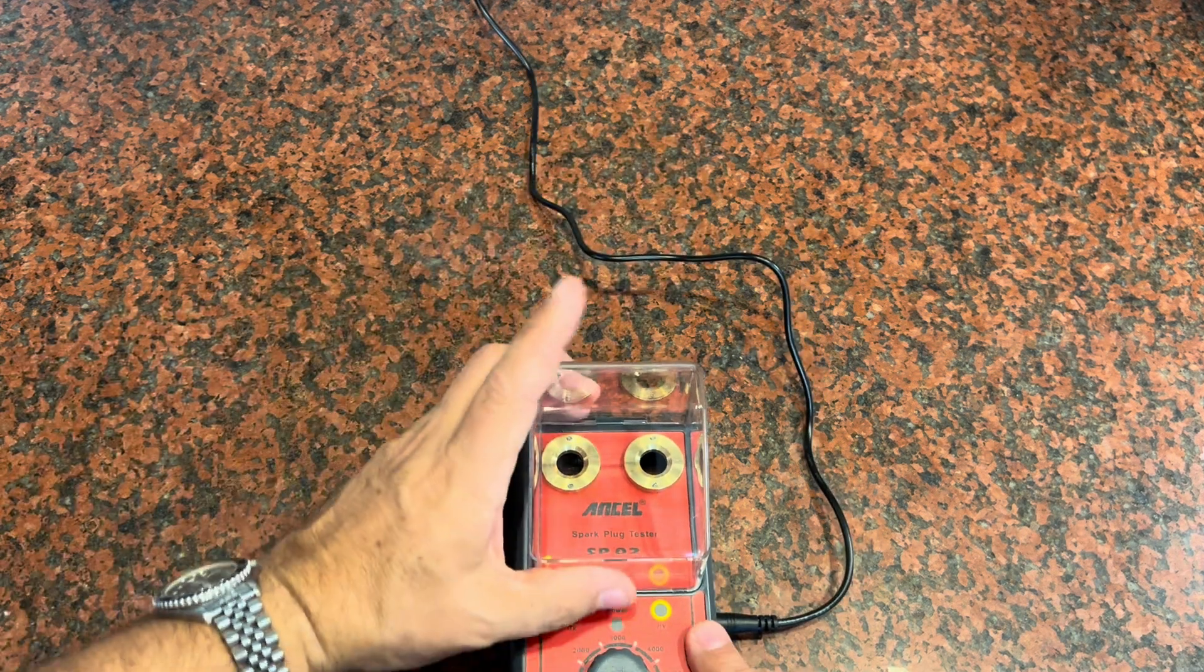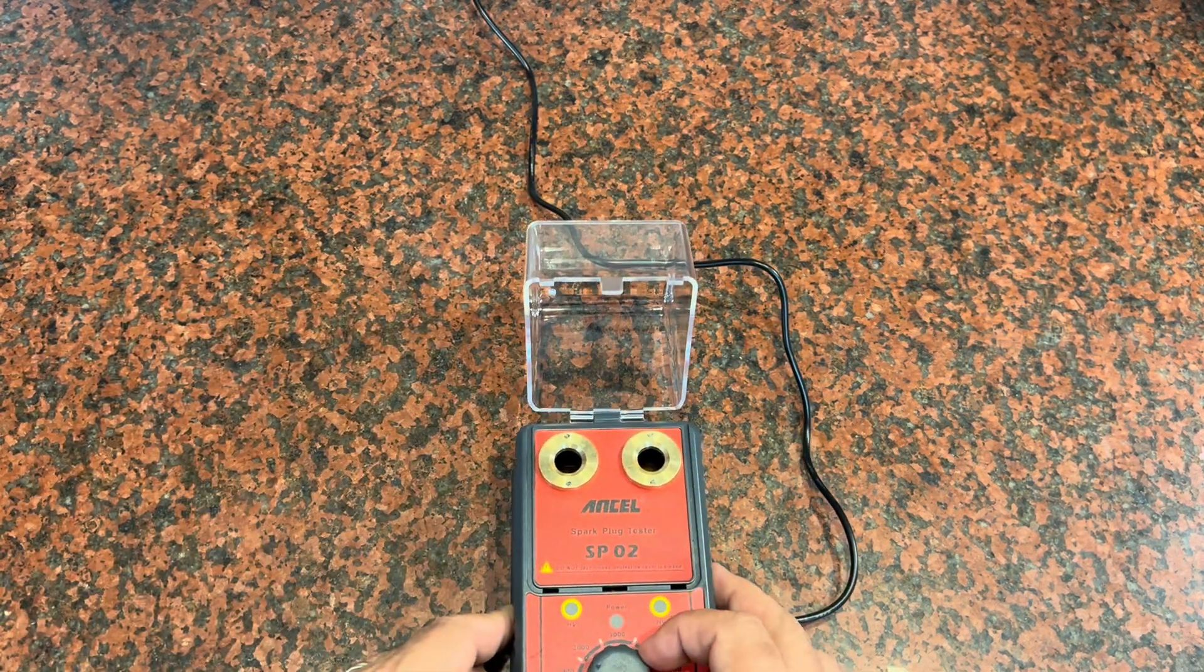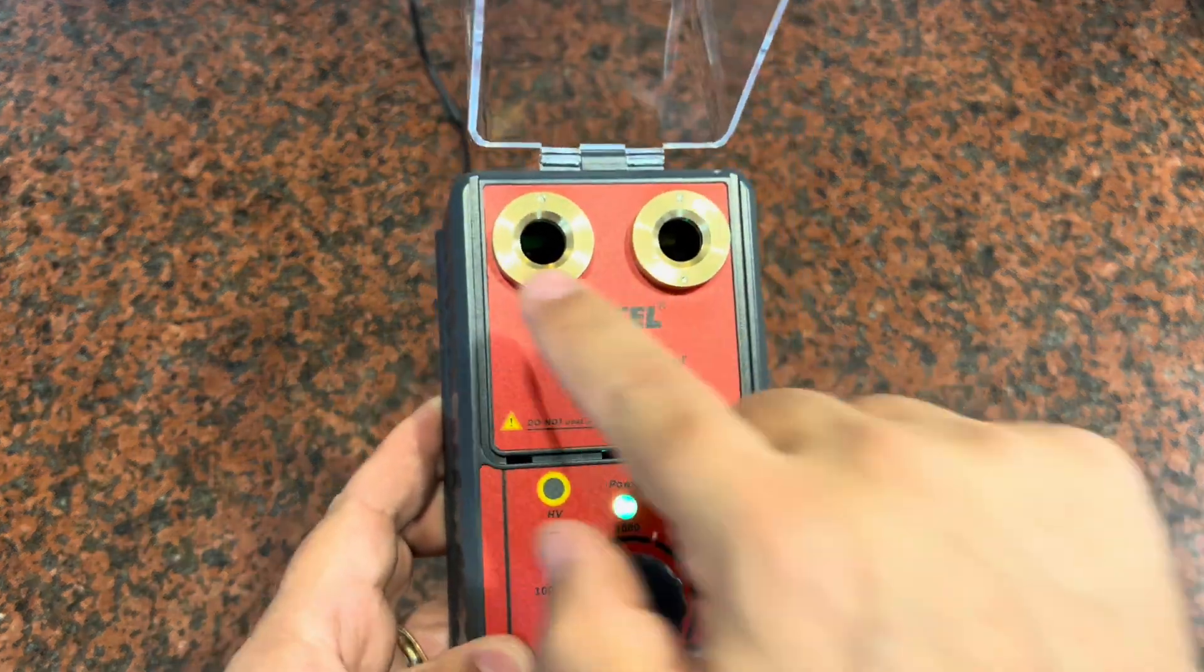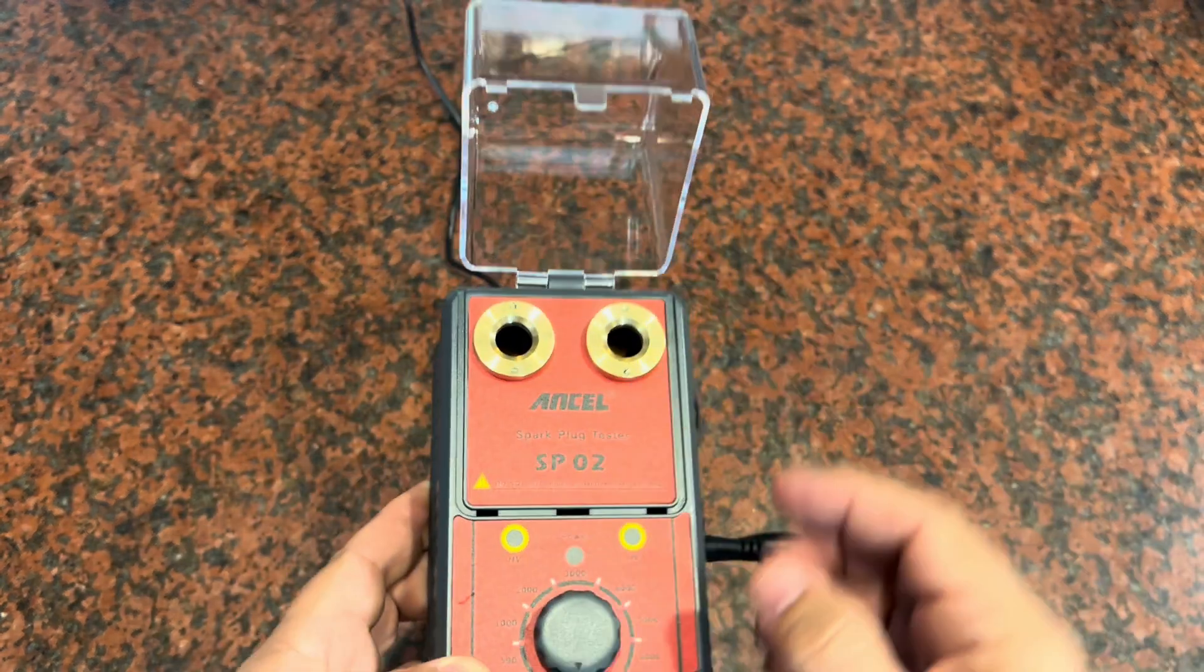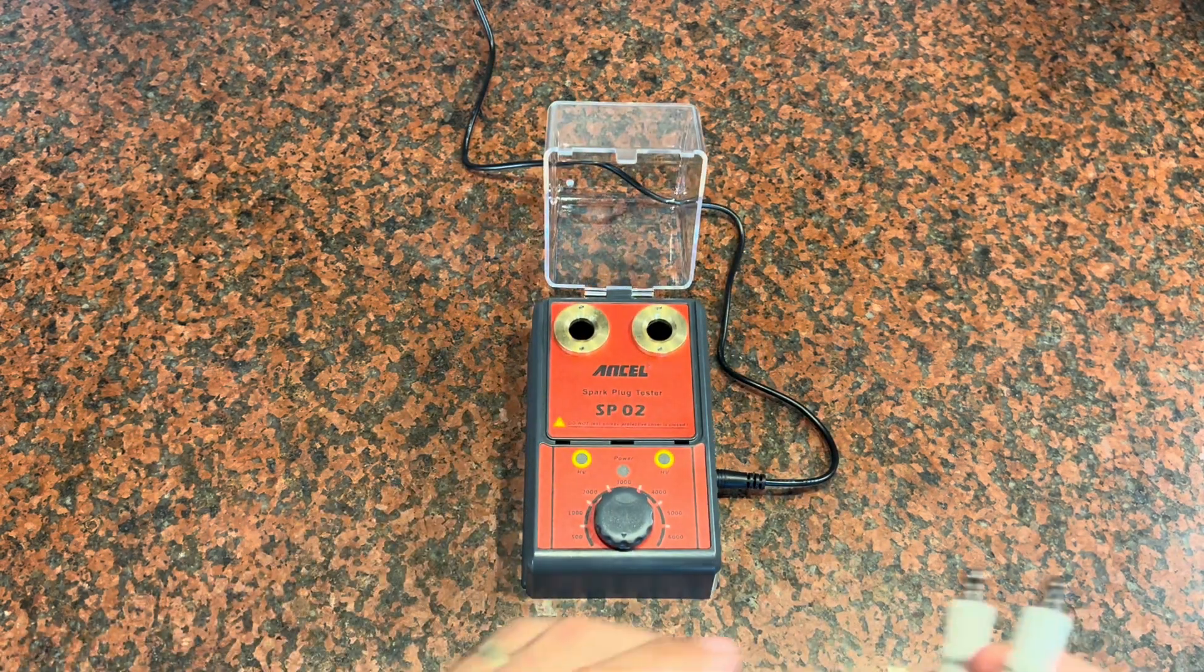So when you're testing, what you're going to do is open up this case, put your spark plugs in here, and then you'll turn this knob here, and that's going to start to put voltage through the spark plugs, and you'll be able to watch and see how they're sparking.